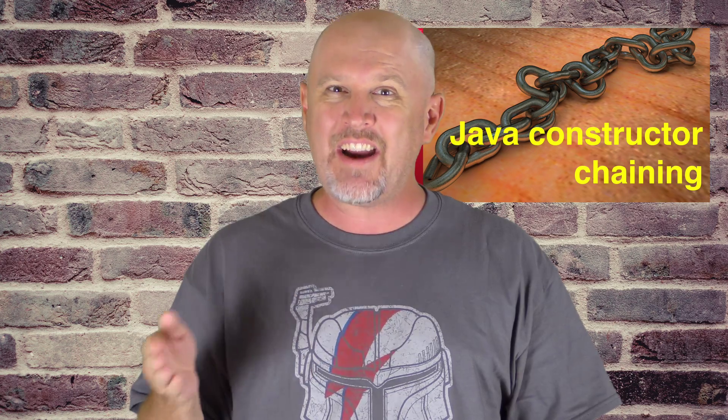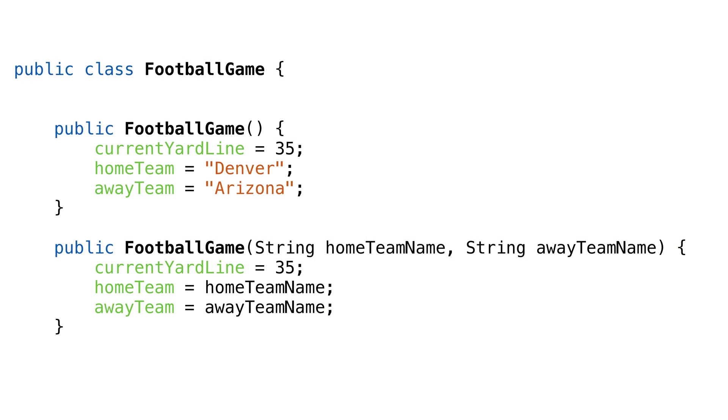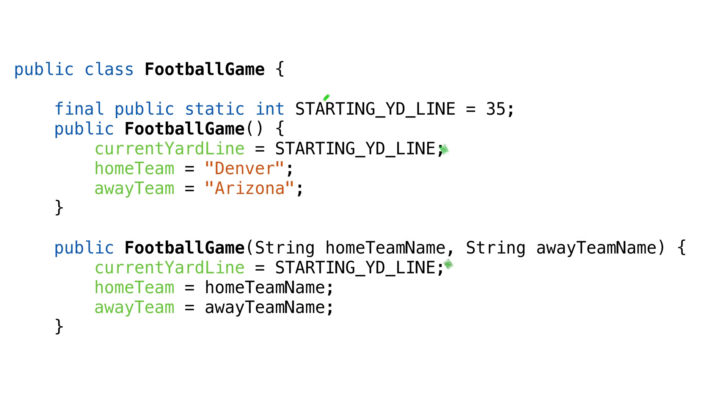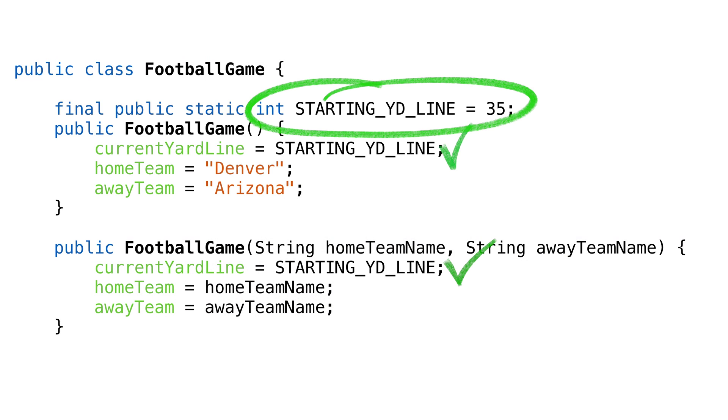We were setting the same starting yard line in every constructor in our football game. Our concern was, if the rules of the football game changed again, we would need to check every Java constructor to make sure we're setting the value correctly. We could set the value as a constant, which would reduce the number of places we need to refactor.